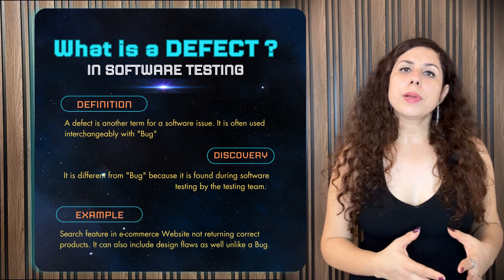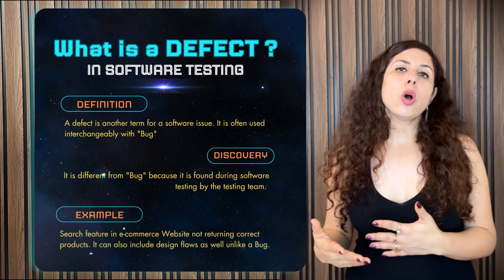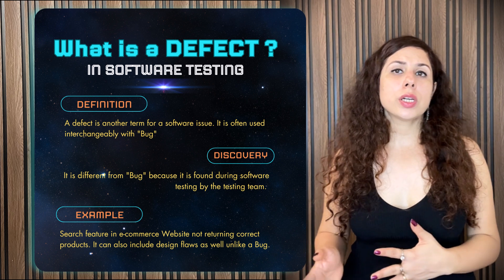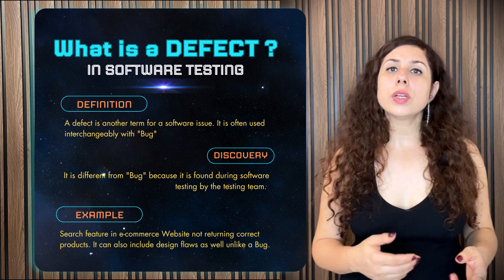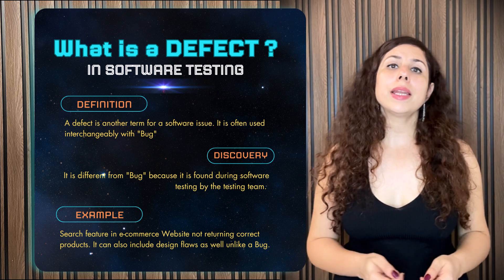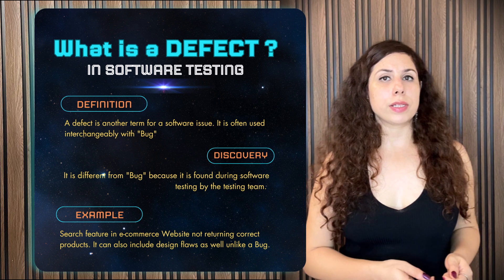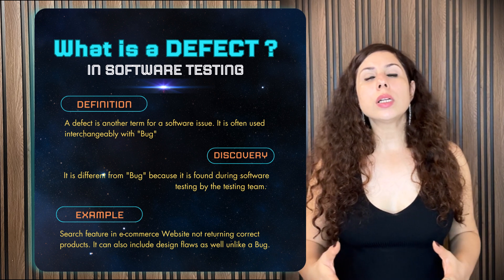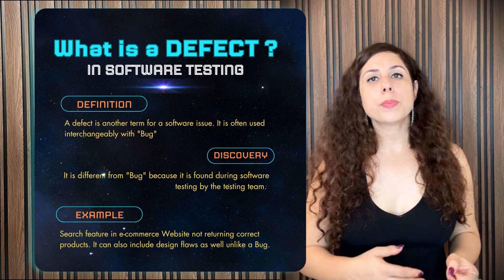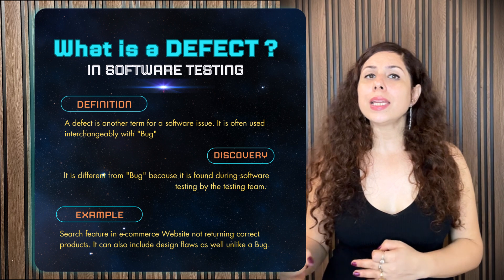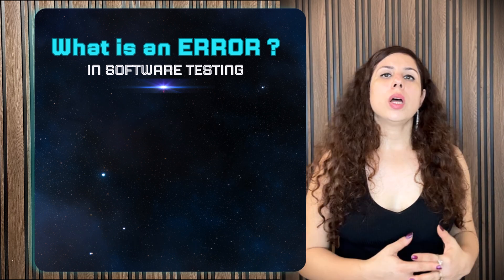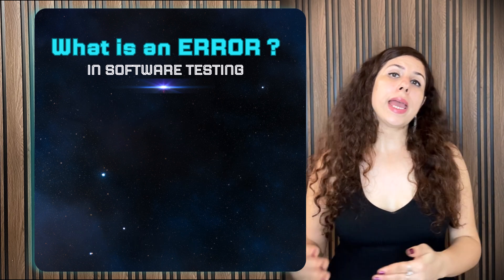For example, in an e-commerce website, if the search feature doesn't return the correct products, then it is a defect. A defect is a broader term than a bug because it can include design flaws as well.